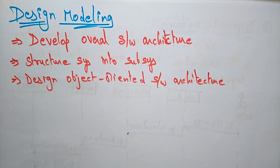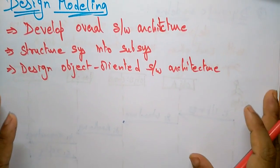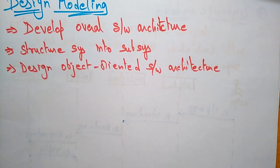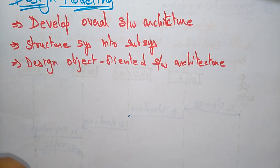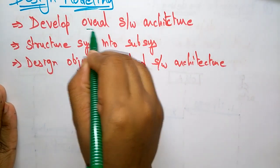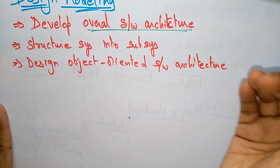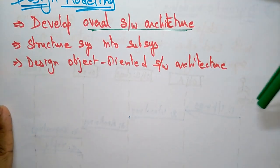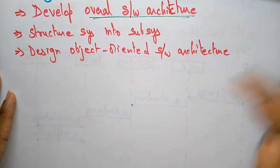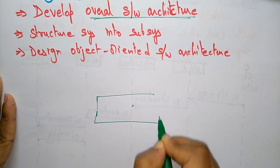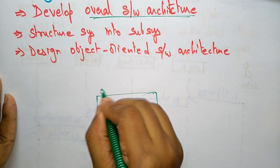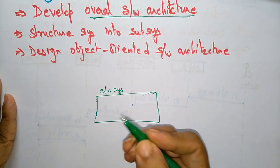Let me show you in diagrammatic form how this design modeling works. I'll take a simple example to explain. The design model gives a complete overall system architecture. Let me take a software system and explain how it is going to be designed.